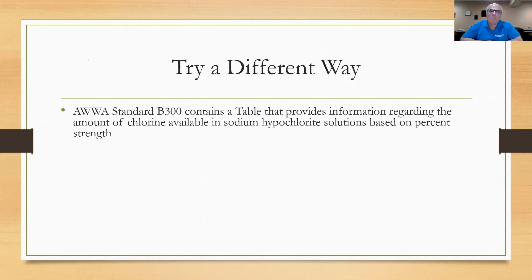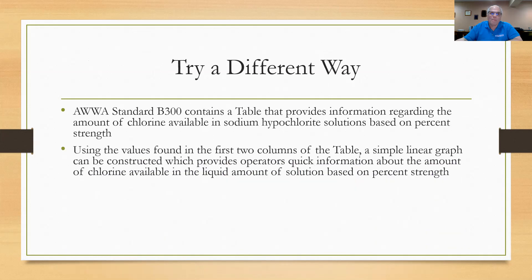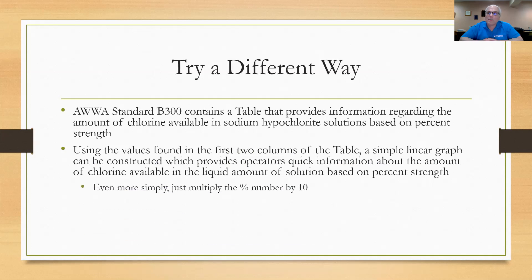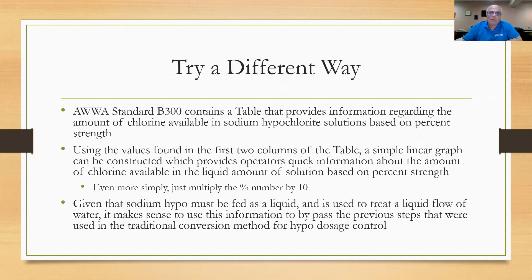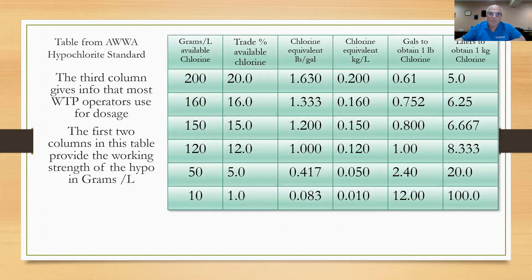The B300 standard that AWWA puts out contains a table that provides information about the amount of chlorine available in sodium hypochlorite solutions based on percent strength. Using the values in the first two columns of that table, you can make a simple linear graph for your operators if they want quick information about the amount of chlorine available in the liquid based on percent strength. Let me go over that table with you — this is what it looks like.